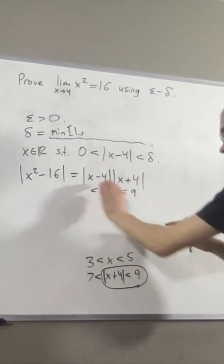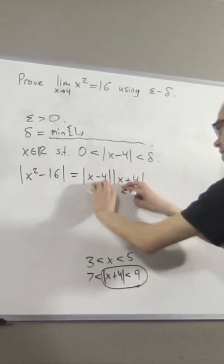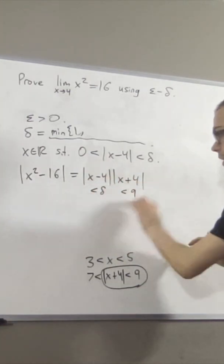So this guy's less than delta, this guy's less than 9, but since these guys are both positive, their product must be less than 9 delta.